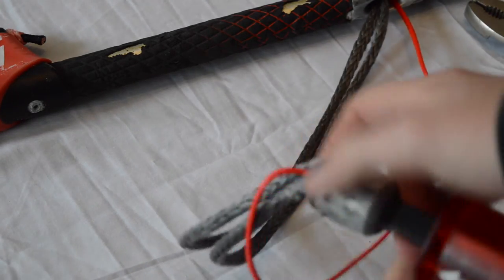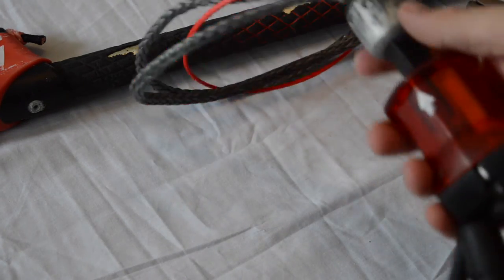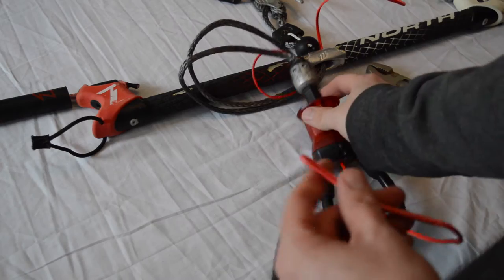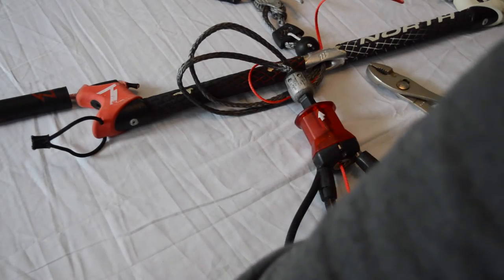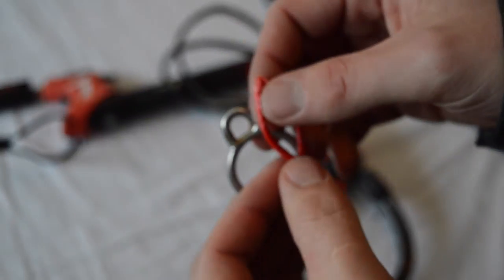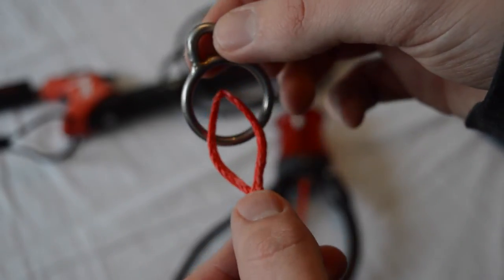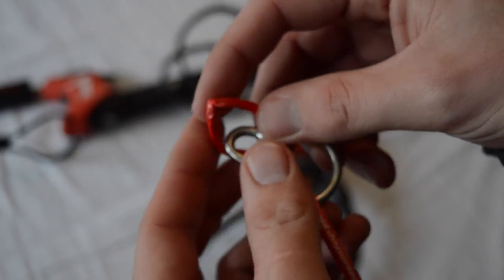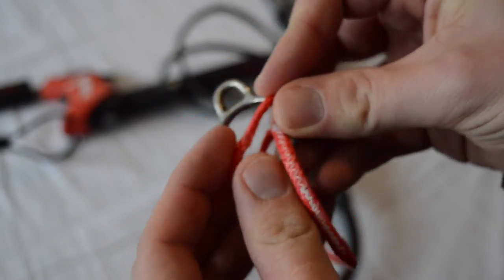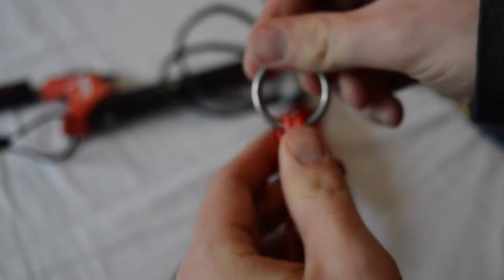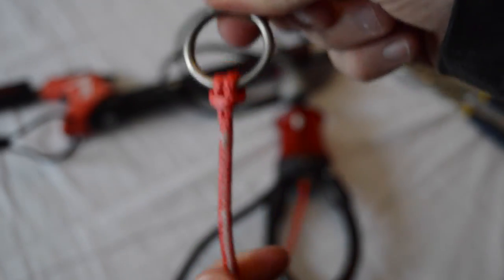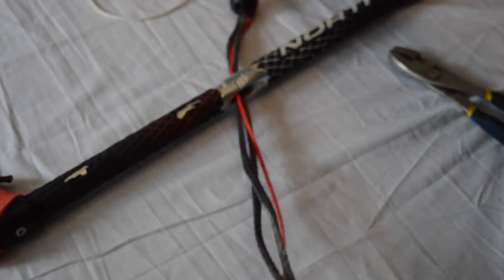Once it's through, that's pretty much it. We just have to reattach the leash attachment in the opposite way that we took it off. So you're going to put the loop through the center of the ring. And then bring the loop up and around. And that's pretty much it. That's your new safety line on your North control bar.